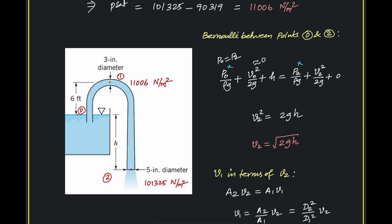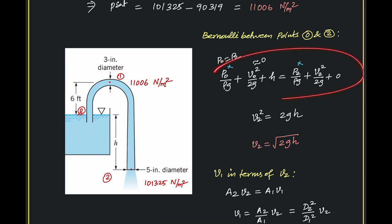We need to find H corresponding to a pressure of 11,006 N/m² at point 1. Since there is flow happening, there is a velocity at this point. To get the velocity at point 1, we first find the velocity at the exit (point 2). We apply Bernoulli between points 0 and 2, since we have complete specification at both. Both points 0 and 2 are open to atmosphere.